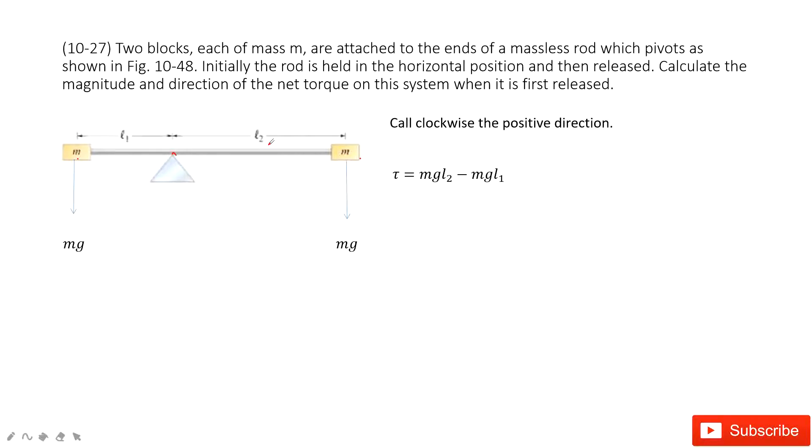Now we need to find the net torque for this system. So how can we do that? First, we assume clockwise as the positive direction. This means the other direction is negative. You can use the right-hand rule to determine it.